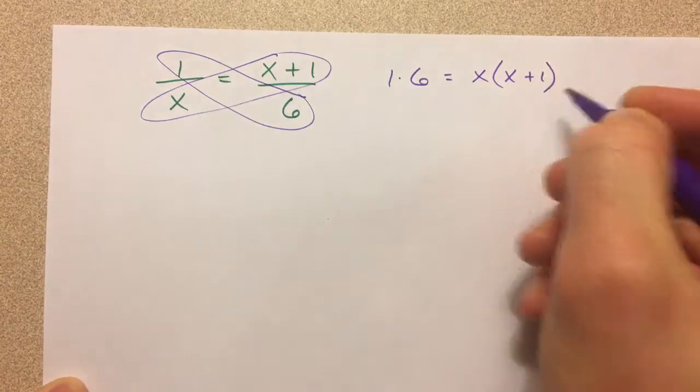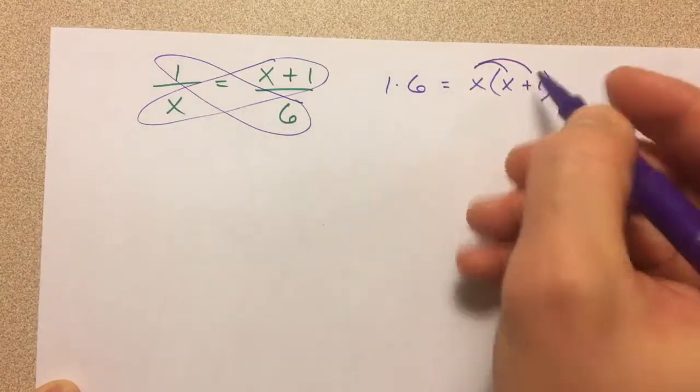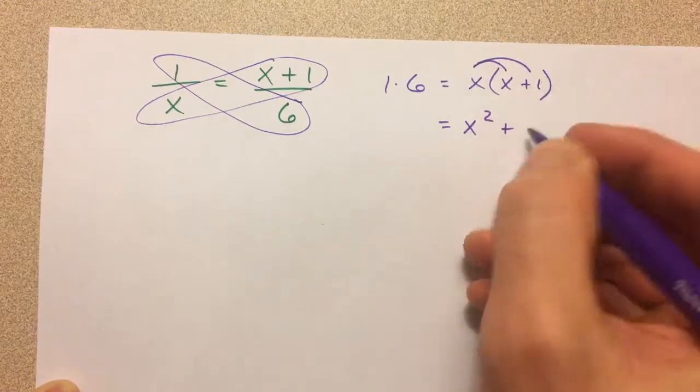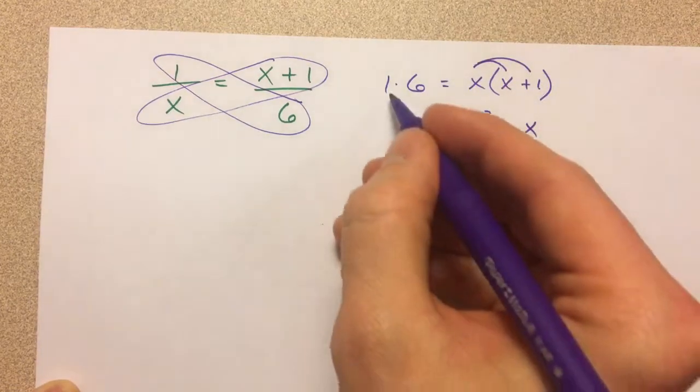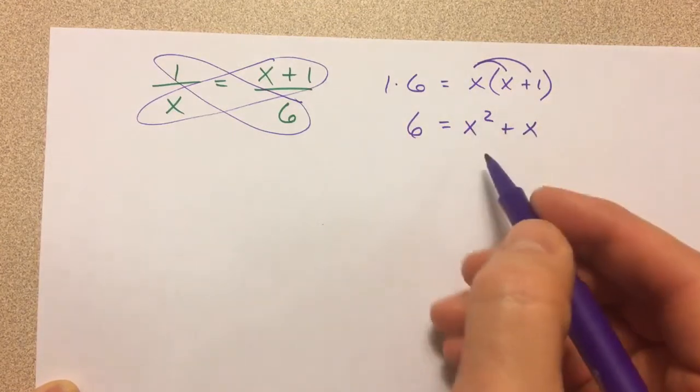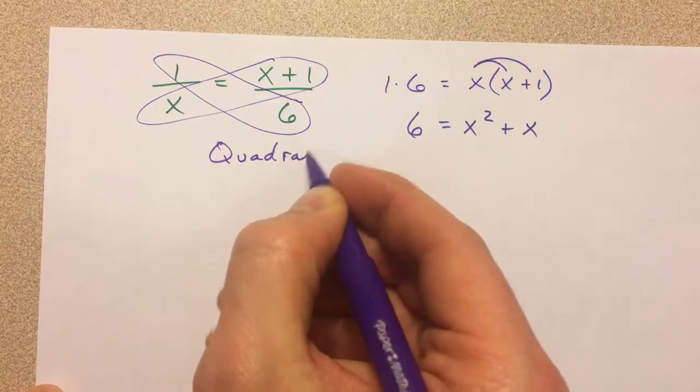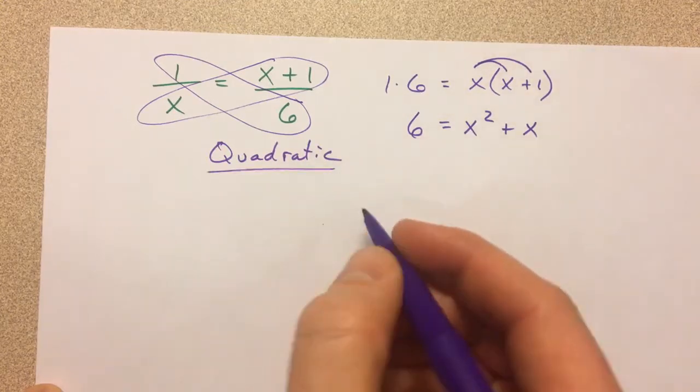Making sure that both the x and the 1 get multiplied. So we get x squared plus x. 1 times 6 is 6. This is what is called a quadratic. A quadratic has an x squared in it, and there's a couple different ways of solving it.